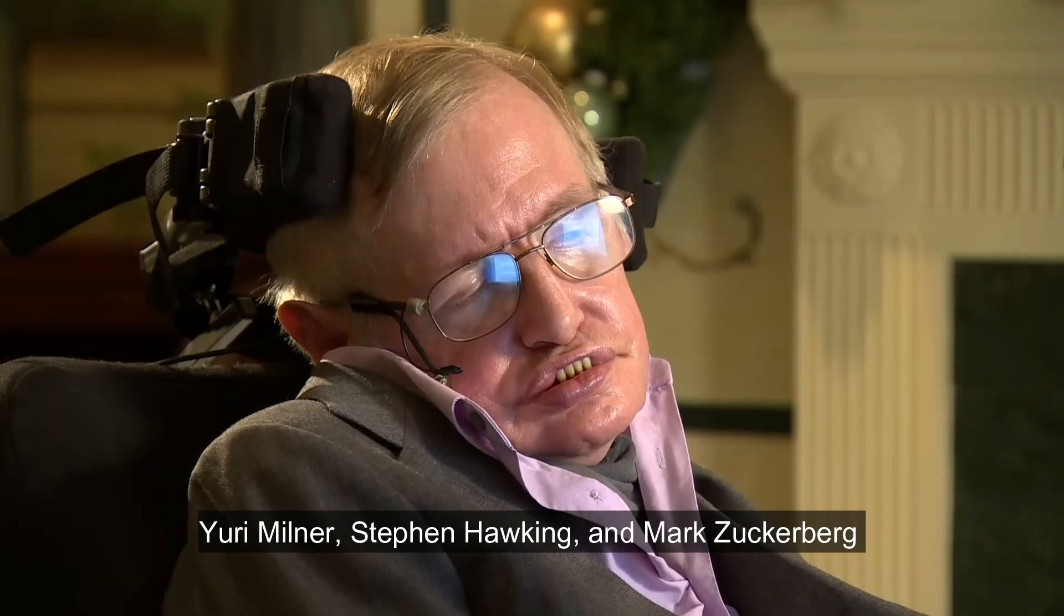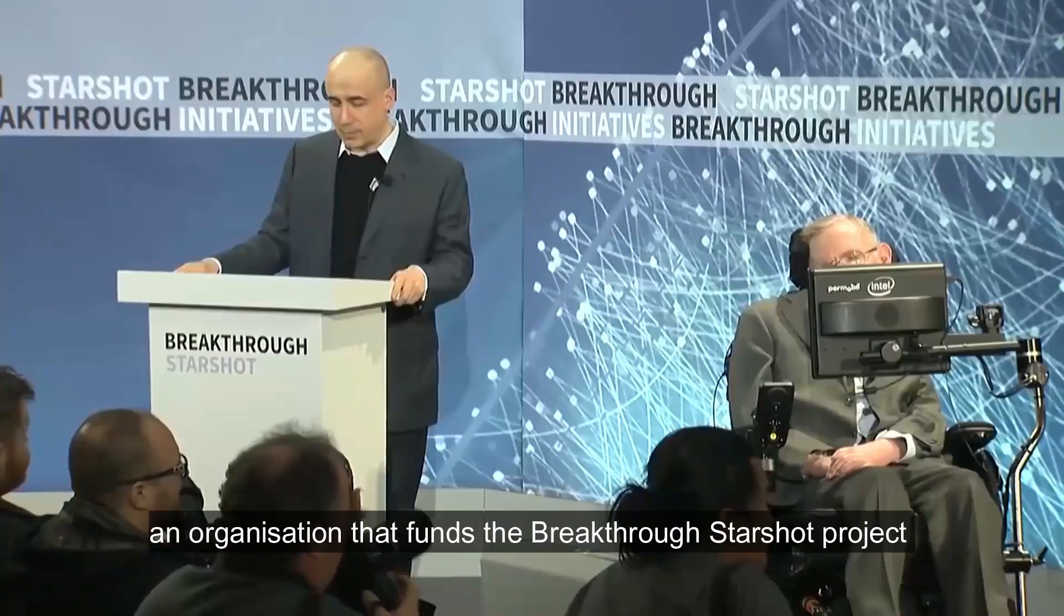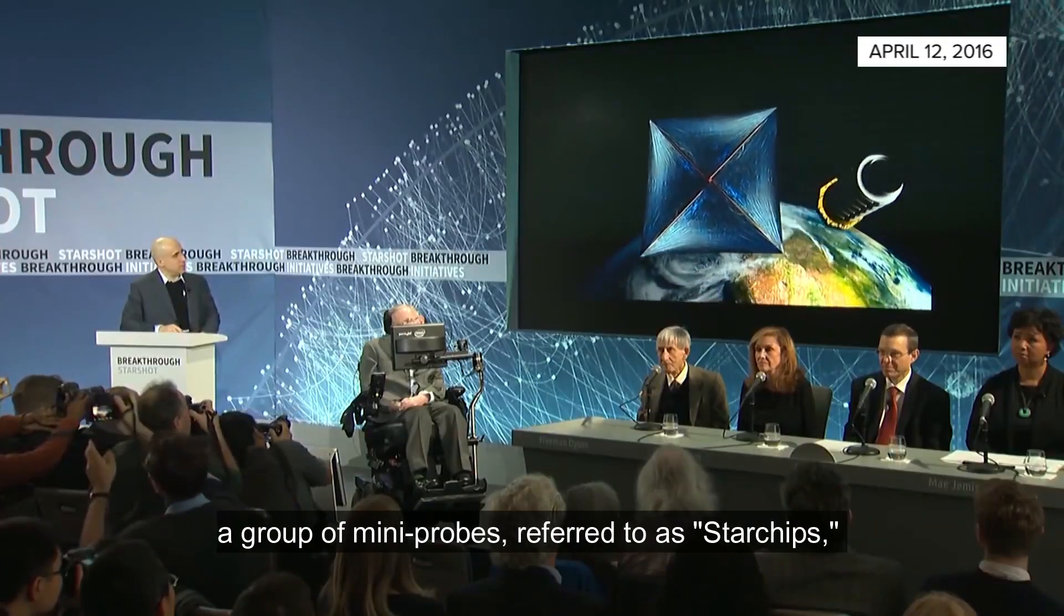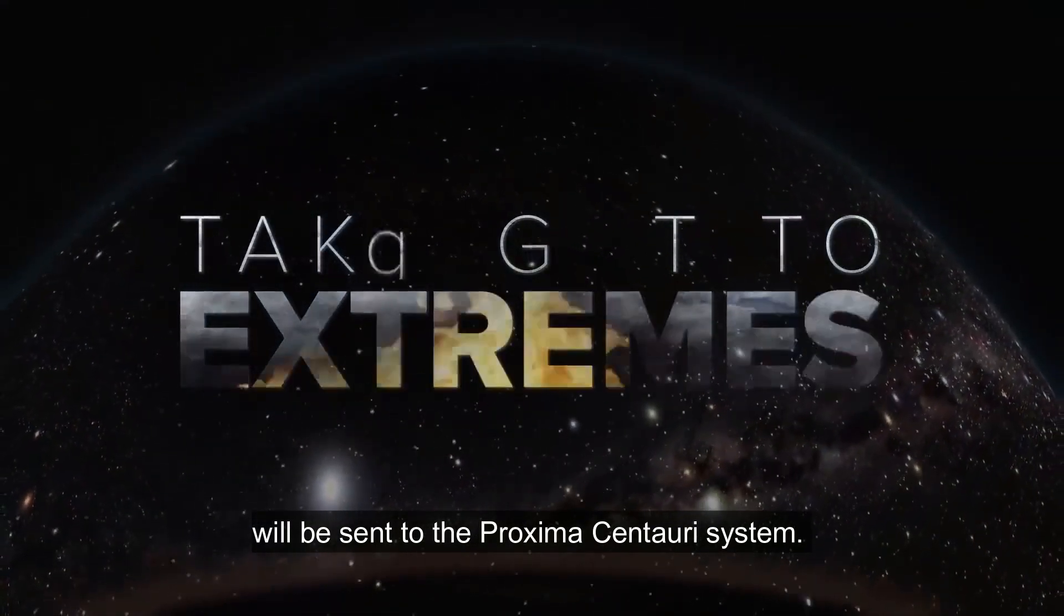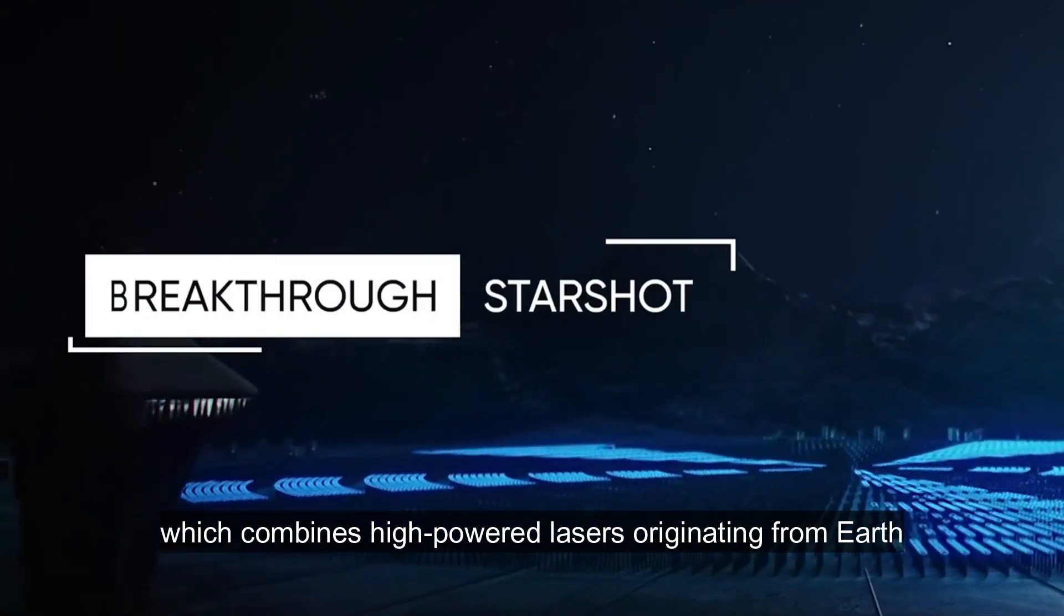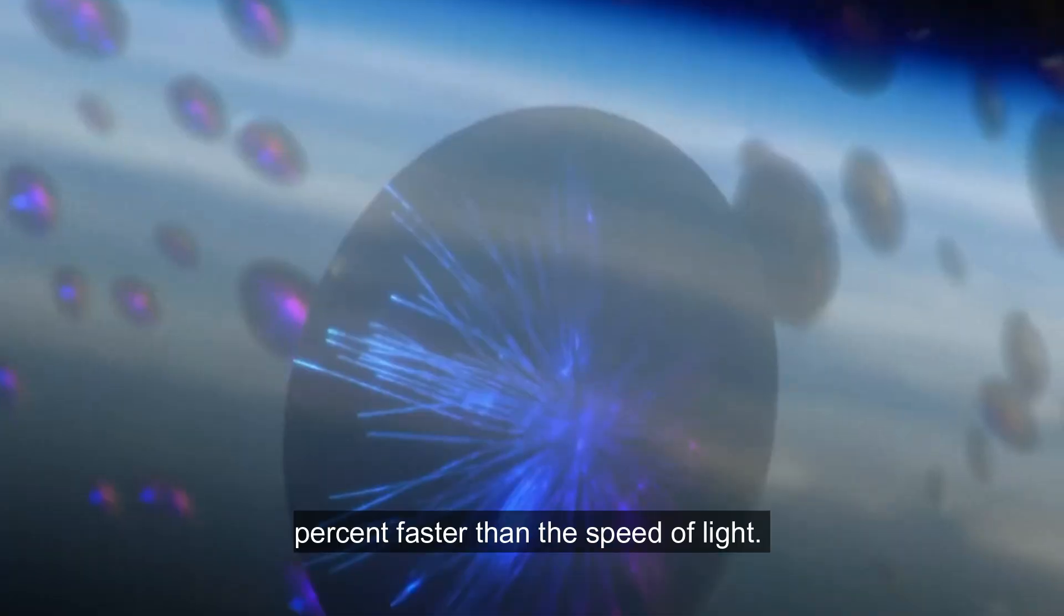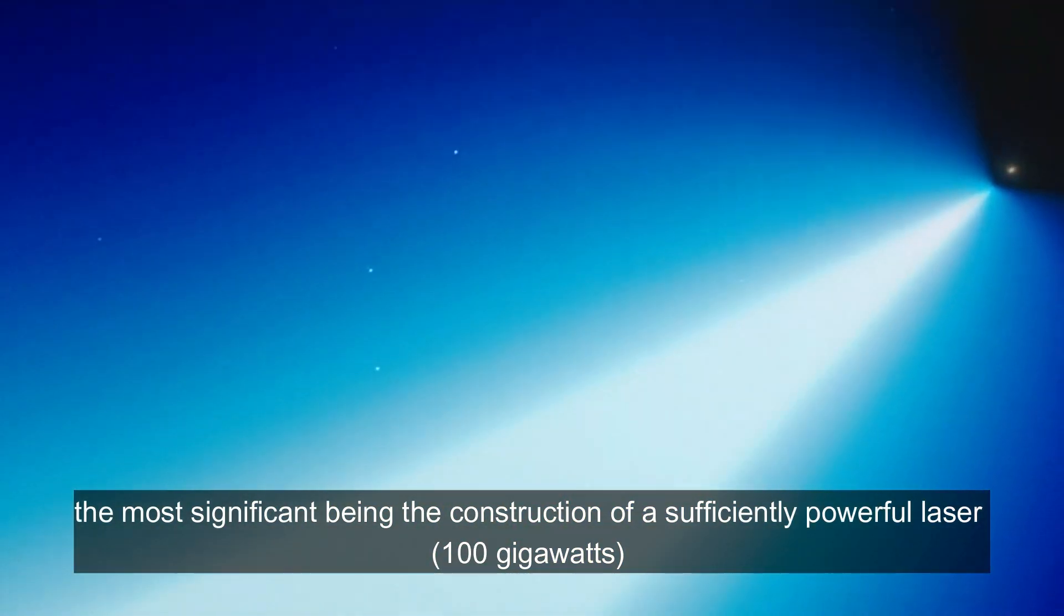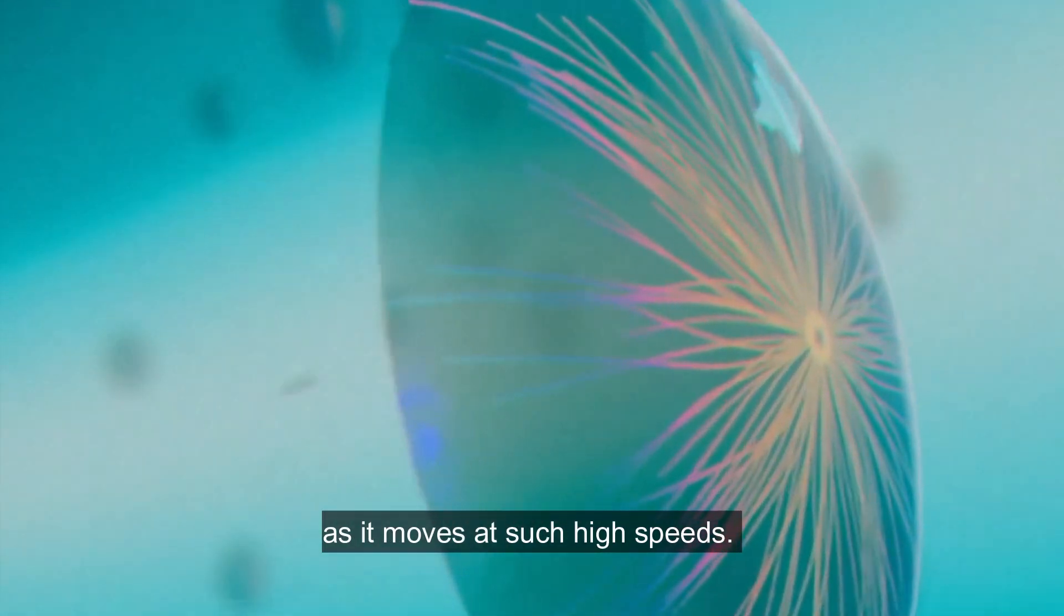Yuri Milner, Stephen Hawking, and Mark Zuckerberg established Breakthrough Initiatives, an organization that funds the Breakthrough Starshot project and hopes that within 20 to 30 years, a group of mini probes, referred to as star chips, will be sent to the Proxima Centauri system. The key technology is the nano-laser sail, which combines high-powered lasers originating from Earth to propel a lightweight sail to speeds 20% of the speed of light. Using this technique will face several obstacles, the most significant being the construction of a sufficiently powerful laser, 100 gigawatts, and the durability of the small probe as it moves at such high speeds.